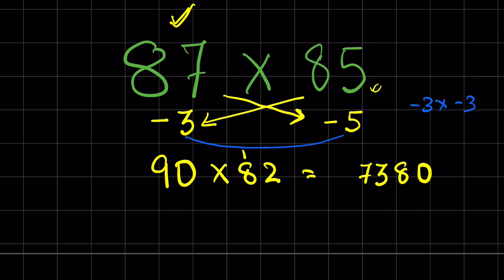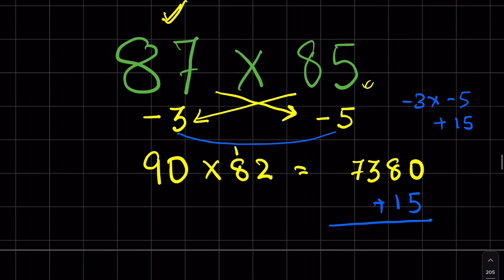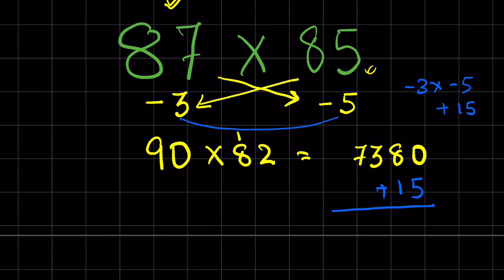Next step is multiply negative 3 times negative 5. It will be positive 15. So you add 15 here. If the result was negative, we would have subtracted here. So 8 plus 1 is 9. 7395. This is the result. You can check in the calculator.